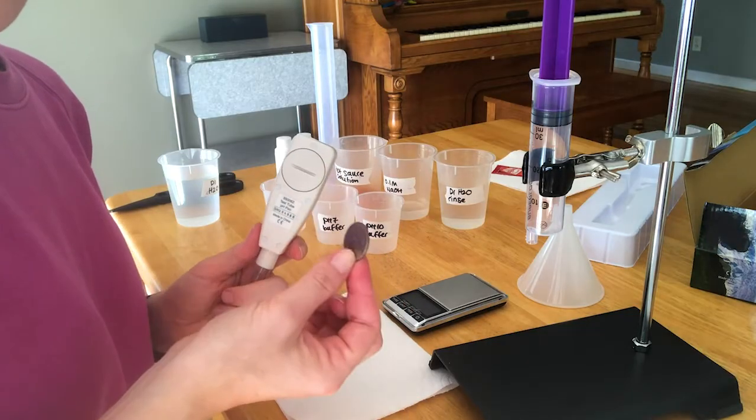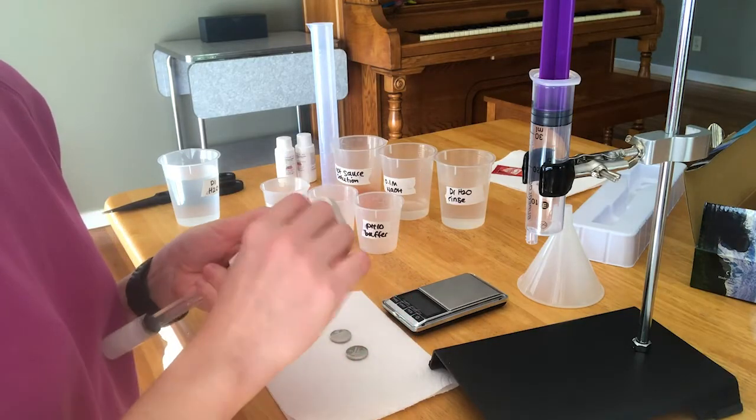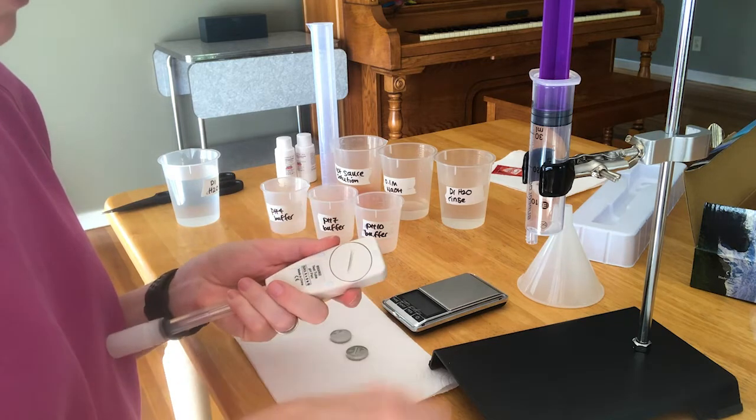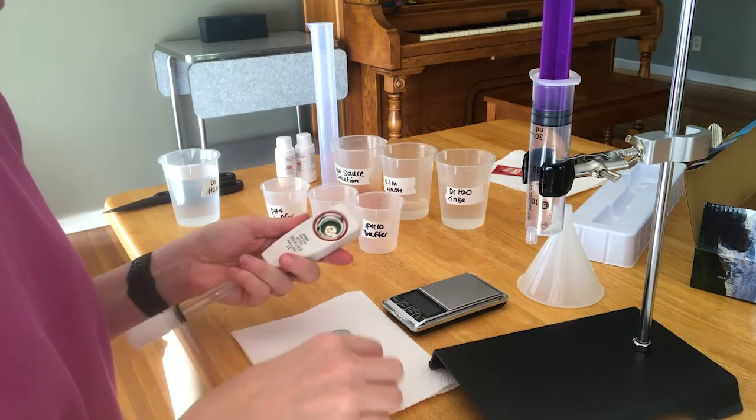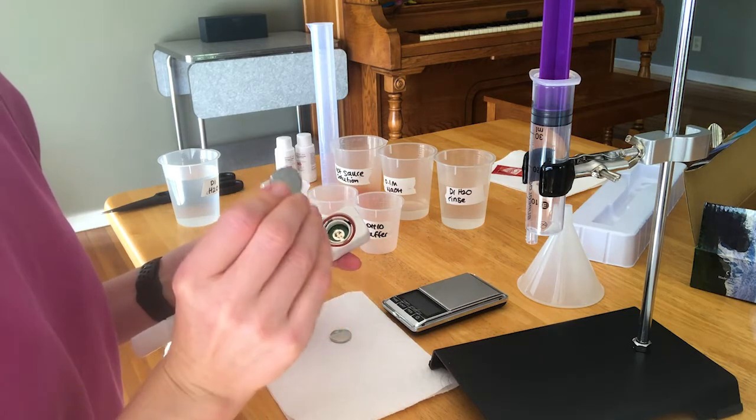You have to calibrate the pH meter before you start using it, so you're going to need a quarter to open the back. Just twist it to the right. You're going to see there's this little rubber seal, this o-ring. Make sure that doesn't fall out.